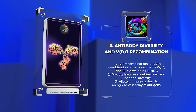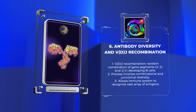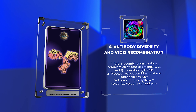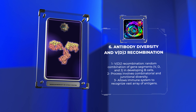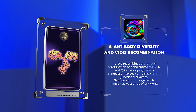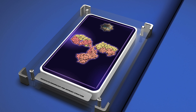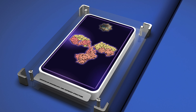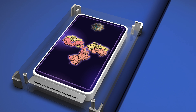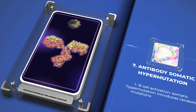During VDJ recombination, gene segments V, D, and J randomly combine to create unique immunoglobulin variable regions in developing B cells. This process, involving combinatorial and junctional diversity, allows the immune system to recognize a vast array of antigens.